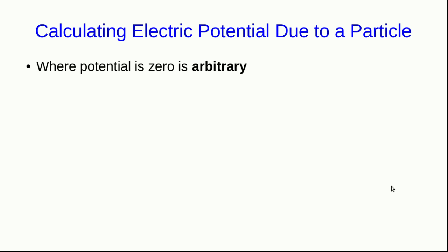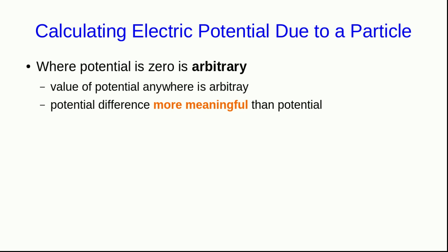The reason I started off looking at potential difference and not potential is that where we set the potential to zero is arbitrary, because where a potential energy is zero is arbitrary. And so since that's arbitrary, the actual value of the potential anywhere is arbitrary. It's really potential difference which is meaningful, not potential.